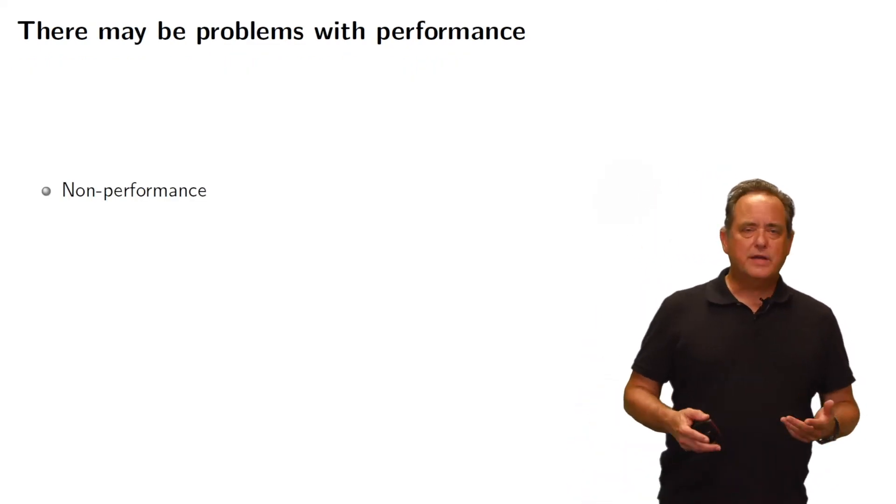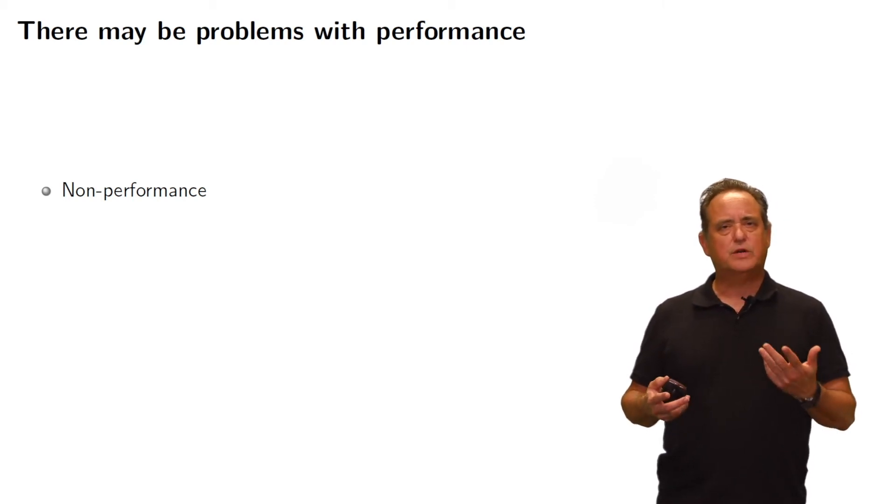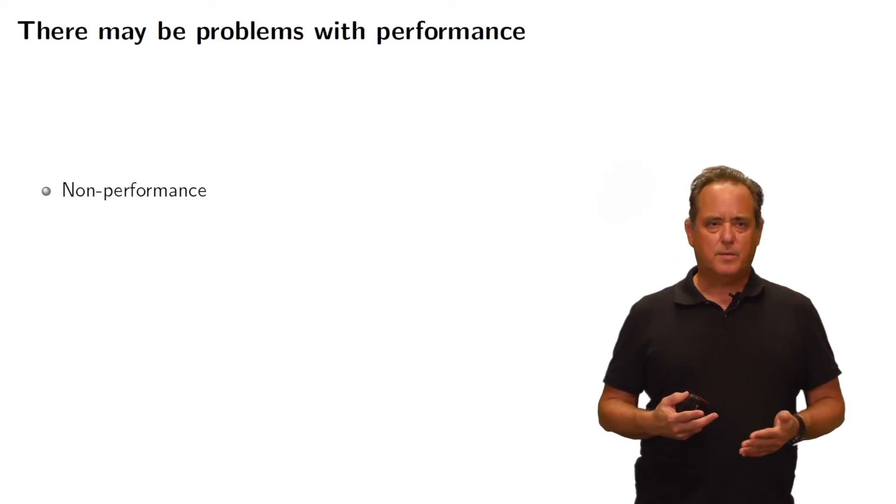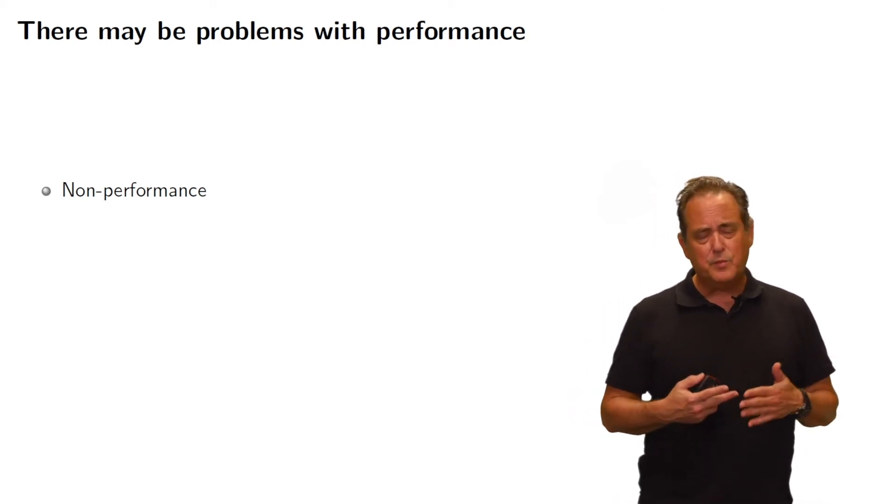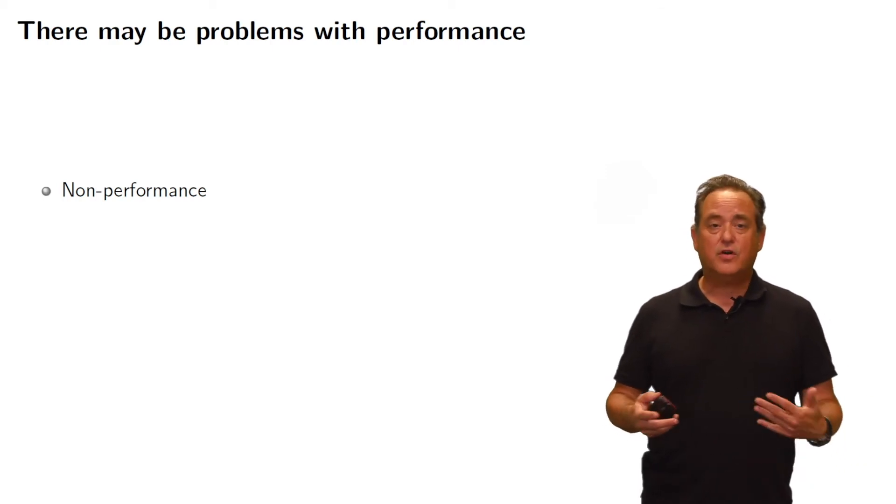And those risks are associated, first of all, with two types of risks. And the first has to be problems with performance. And when we talk about problems with performance, there's various categories of that. First of all, non-performance.